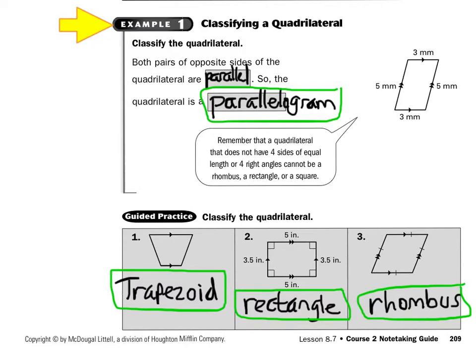Take a look at example one: classifying, which just means naming a quadrilateral. Looking at this shape, we want to figure out how many sides are parallel. Notice how the top and the bottom have that little triangle marker — that means the top and the bottom are parallel. And the sides have two little arrows, which means those two sides are also parallel. So both pairs of opposite sides are parallel and it has four sides, so this is a parallelogram.